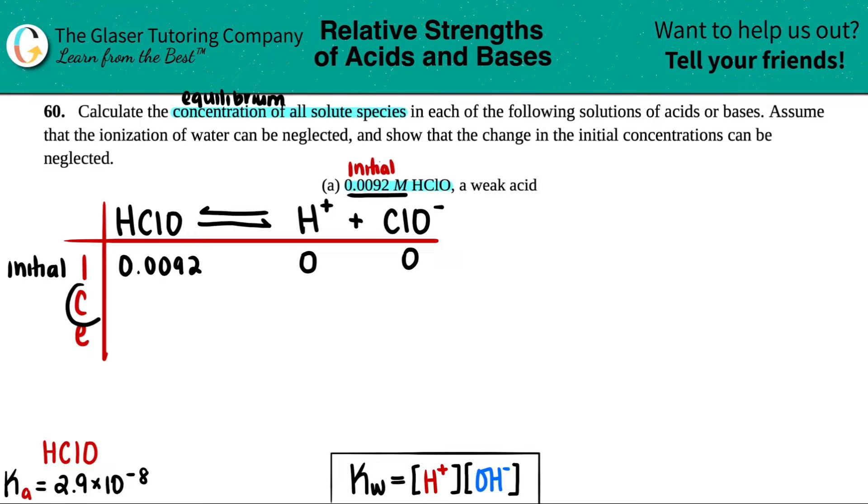Now C stands for change. The change in concentration from initial to equilibrium. Well, I don't know that. So we label it as a variable. Pick any variable, but we'd like to use X. Anyone is fine though. Remember, you can only go up from nothing, right? So since we started off with nothing, these have to be plus and this has to be minus. And I'll say minus X and plus X and plus X.